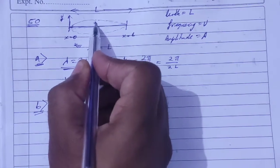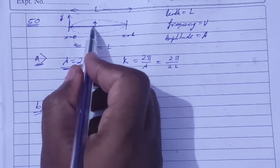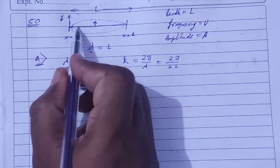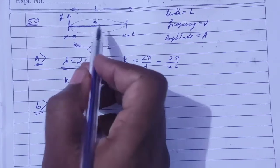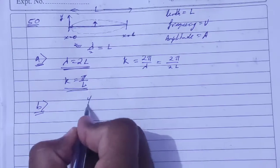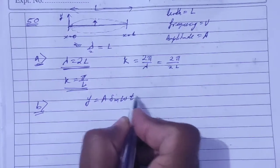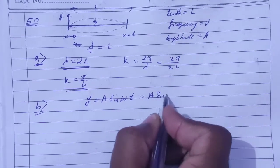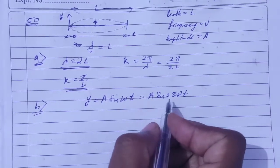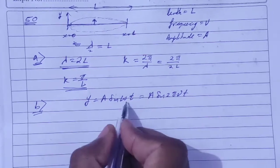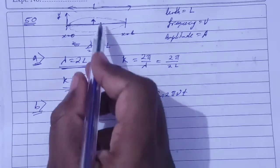The particle equation at mean position at time t equals 0 moving in positive y direction. The equation is y equals A sine omega t, which is A sine 2 pi nu t, times sine kx.